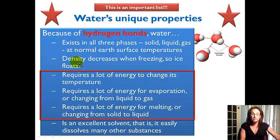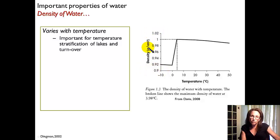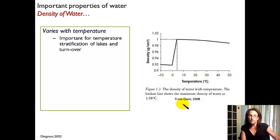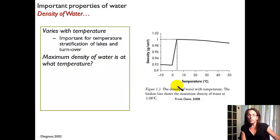This list of unique properties is very important, and in particular the three related to energy distribution around the globe and regulating Earth's climate — and the underlying reason for these properties is that water can form hydrogen bonds. So first let's talk about the density of water, which varies with temperature. Here we have a graph of the density of water going from 0.9 to 1.02 grams per cubic centimeter — that's mass per unit volume — with temperature on the other axis in degrees Celsius, going from minus 10 up to 50.